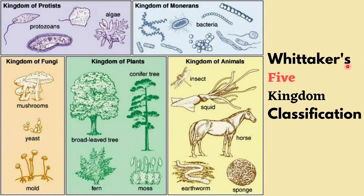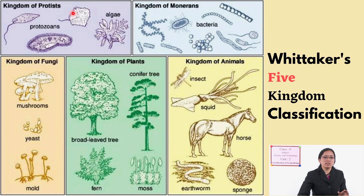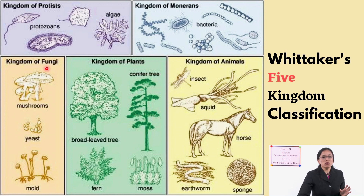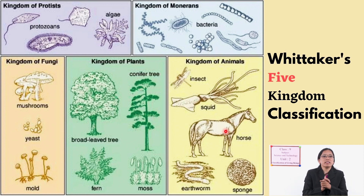Looking at Whittaker's five kingdom classification with examples: in Monera, there are various types of bacteria — rod-shaped, spiral-shaped, spherical-shaped, and some with flagella — all kept here because they have prokaryotic cells. All unicellular eukaryotic organisms are kept in Protista. Those with a cell wall and saprotrophic heterotrophic mode of nutrition are in kingdom Fungi. All green plants are in kingdom Plantae. All animals are in kingdom Animalia. In this way, Whittaker classified organisms into five kingdoms based on the five criteria.